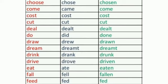More irregular verbs: choose / chose / chosen; come / came / come; cost / cost / cost — all three forms are the same; cut / cut / cut — all three forms are the same; deal / dealt / dealt.